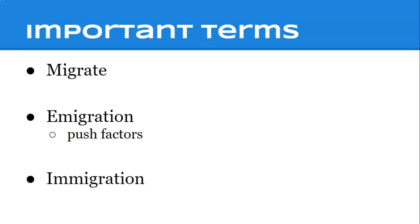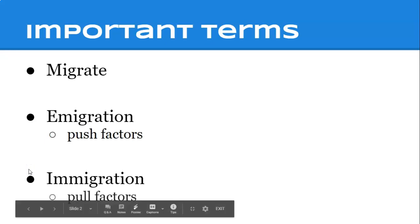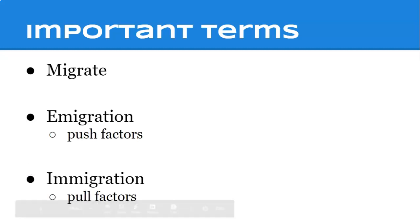Something you've probably heard a lot about is immigration. Immigration is when a migrant comes into a new location — a new country or a new city — and they are drawn into that place by pull factors. Pull factors are anything that draws an individual to that new location.